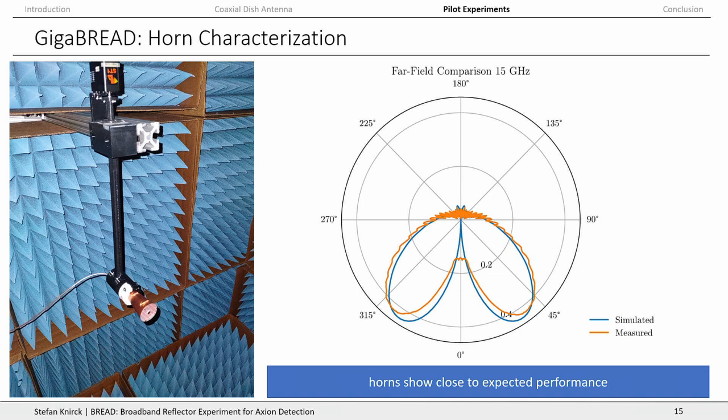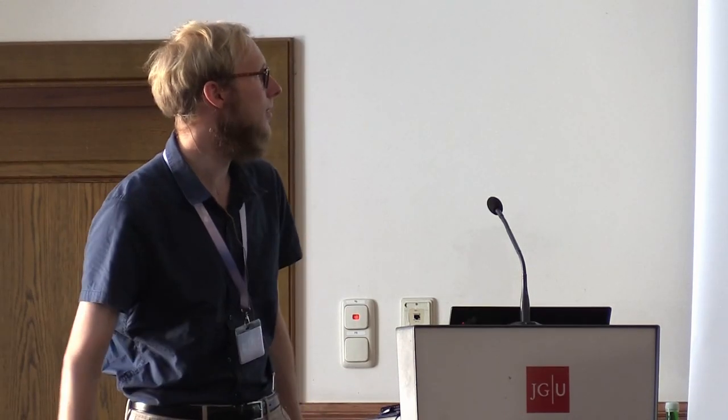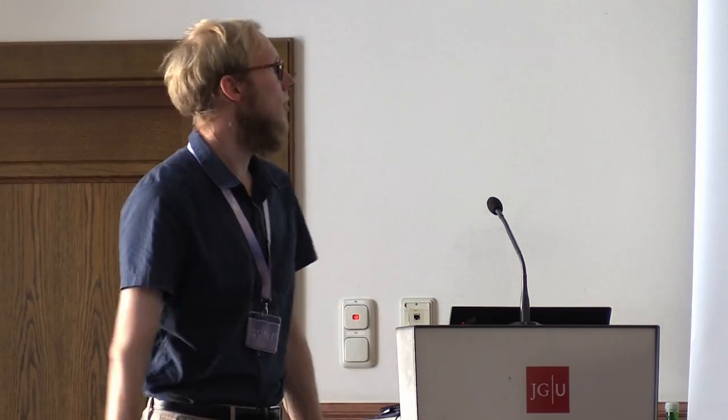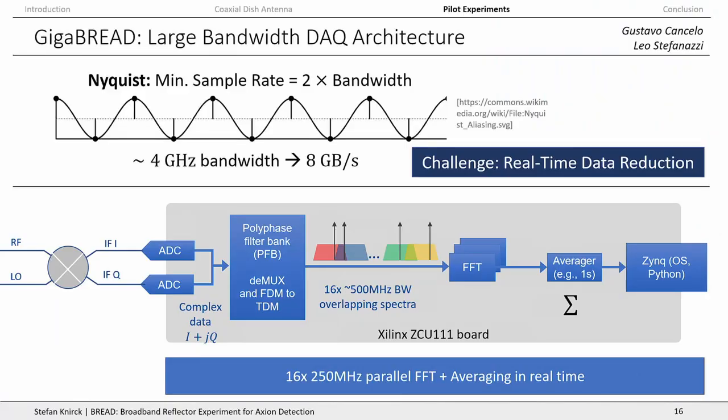We have the reflector and the horn. The remaining piece is our data acquisition system. Since it's a broadband experiment, we need a broadband data acquisition. For a four GHz bandwidth, you have 8 gigasamples per second, which means about 8 gigabytes of data per second. The challenge is real-time data reduction, which we do with an FPGA board — the Xilinx ZU111 — where we implement 16 FFTs with 500 MHz bandwidth in parallel and subsequently average down our spectra in real time. This is already implemented and we are extensively testing it.